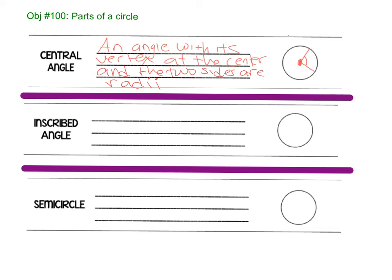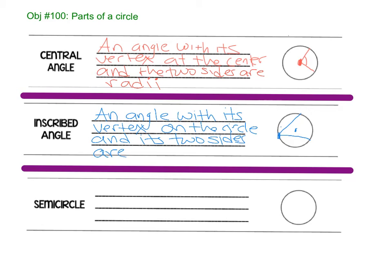An inscribed angle, a little bit different. Instead of the vertex being in the center, see, this is my center, right? The vertex is on the circle. Okay. So it looks like that. An angle with its vertex on the circle. And its two sides are, what are those? Alright, what is this and this? Those are chords.